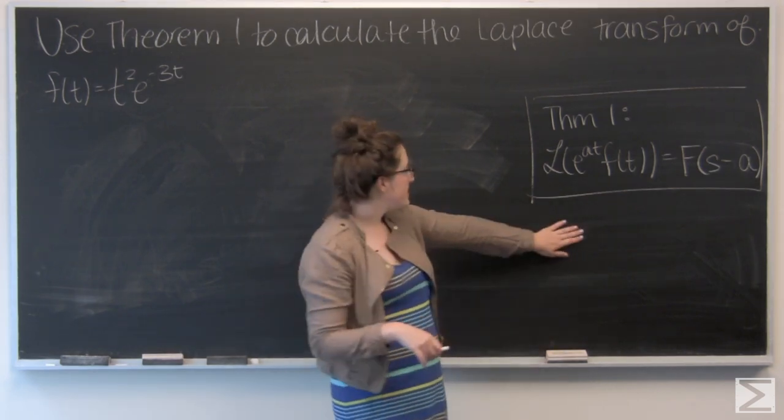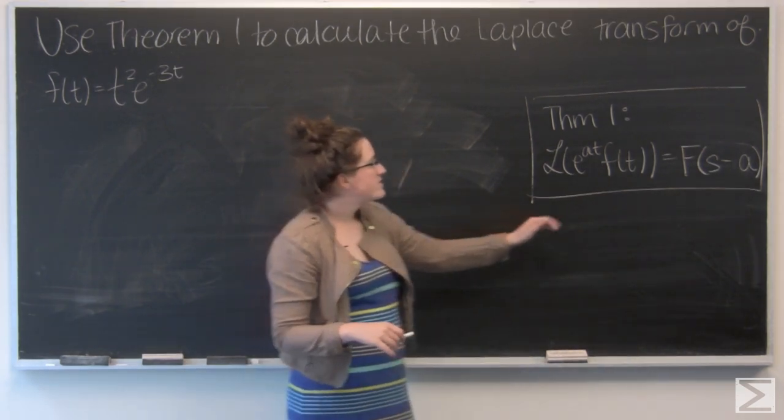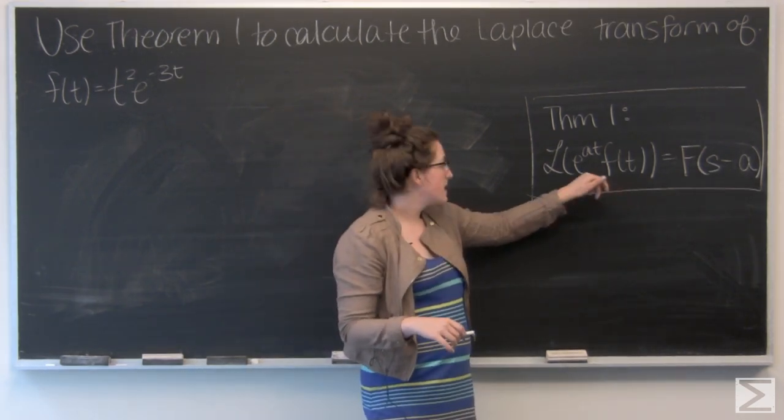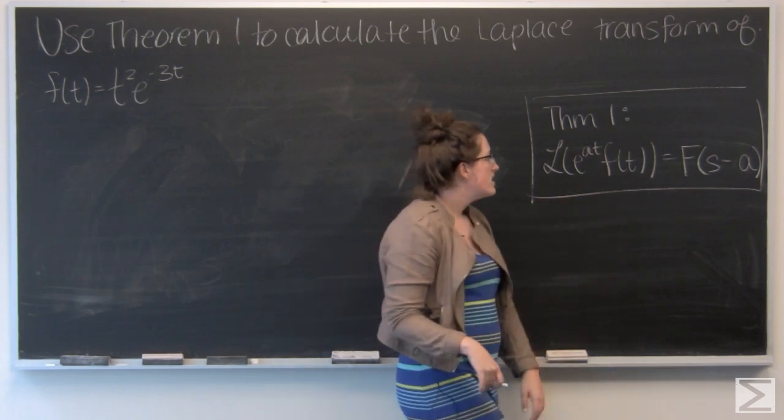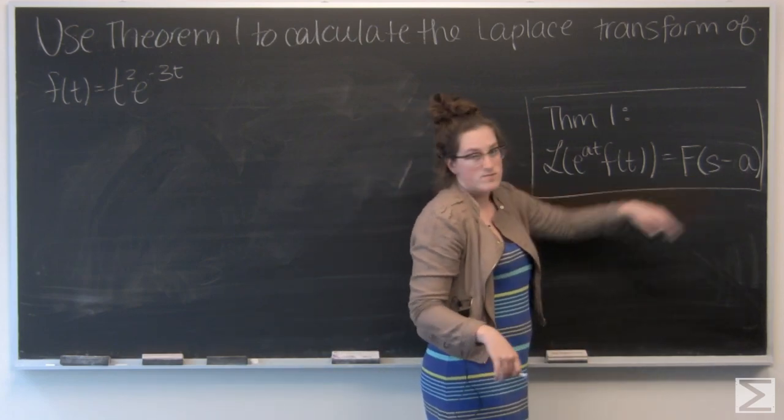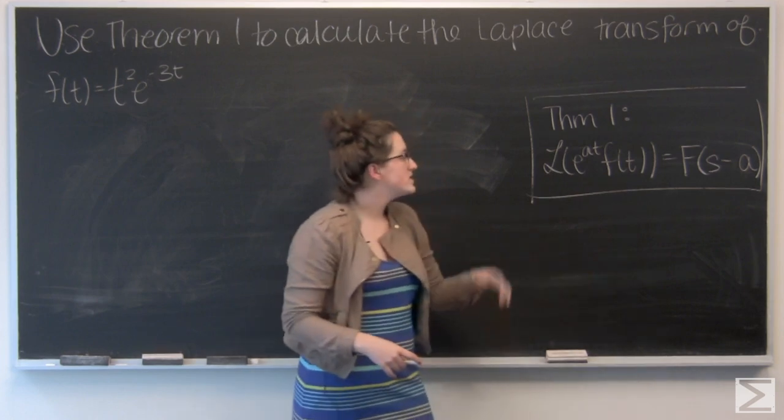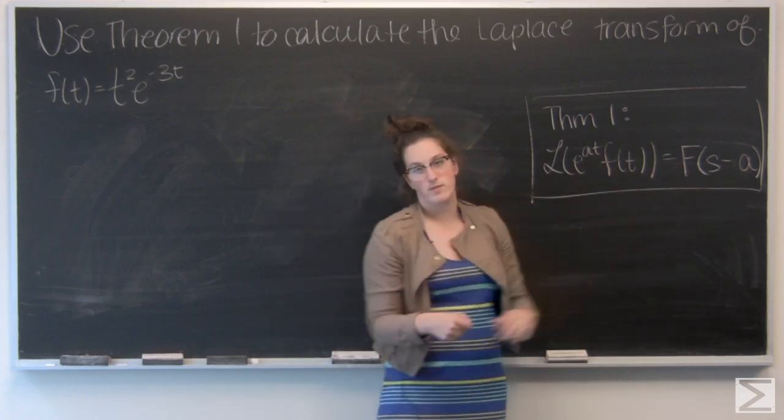And I've got theorem 1 written up here. It says that the Laplace transform of some function f of t times e to the at is going to be F of s minus a. So basically that exponential term shifts the Laplace transform a units.